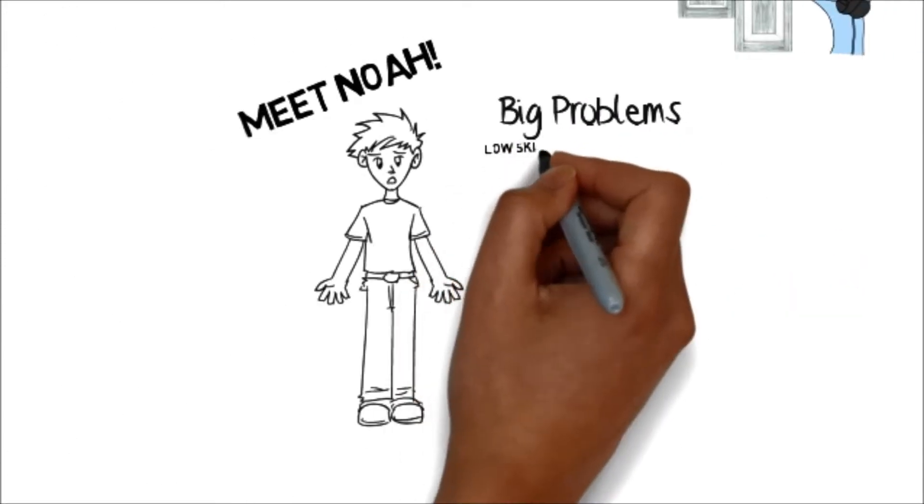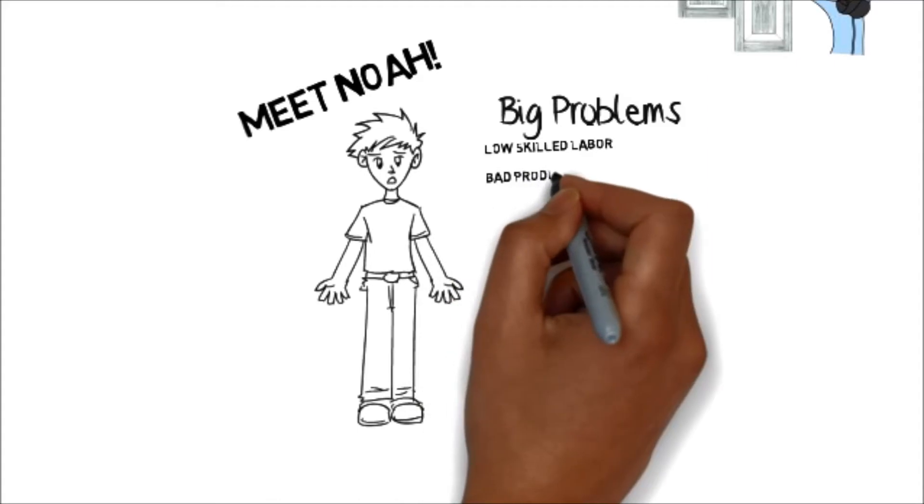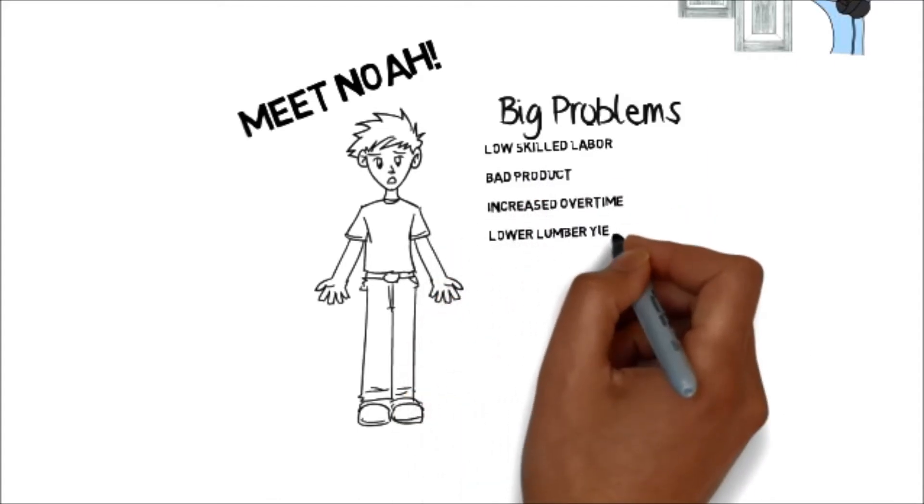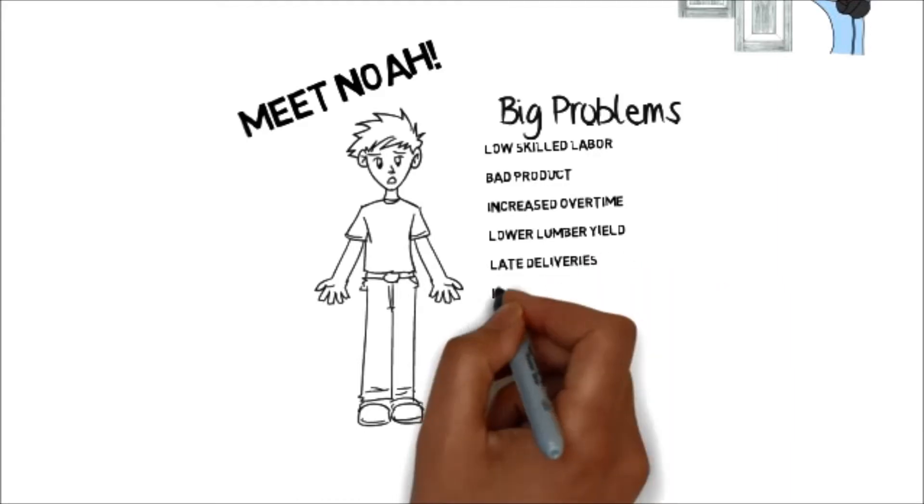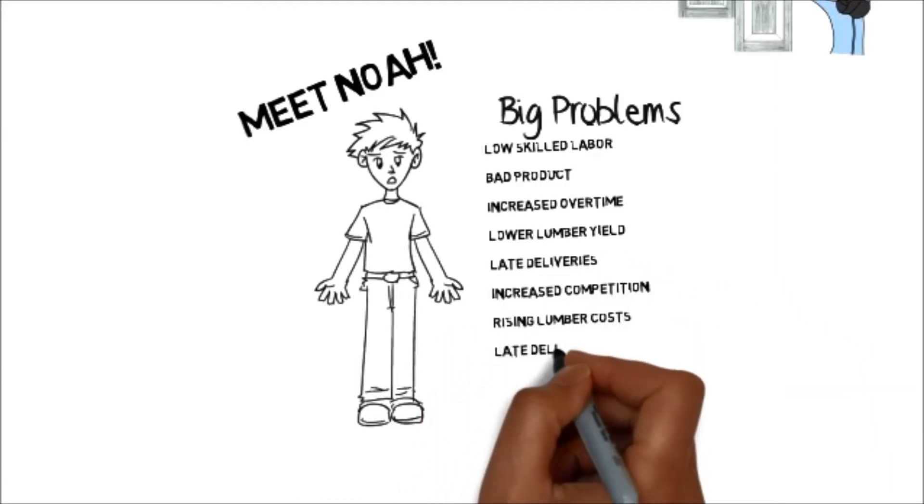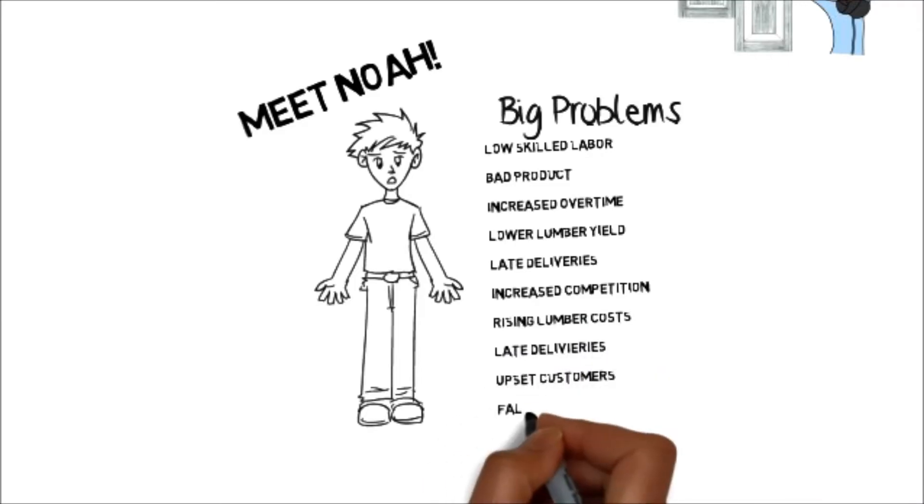It's hard to find skilled workers. His new employees are making mistakes, his old employees are spending their time correcting those mistakes and training the new guys. It's adding up to a lot of overtime. When you have to make it twice, you don't make any money.